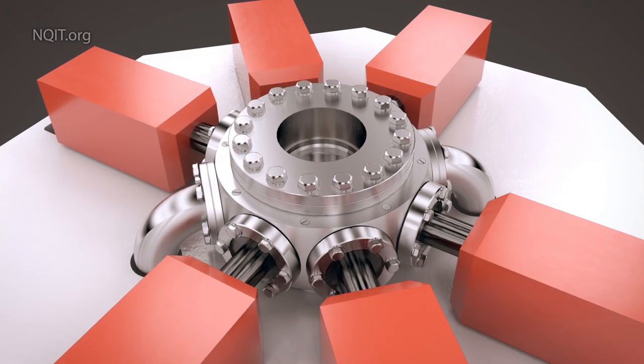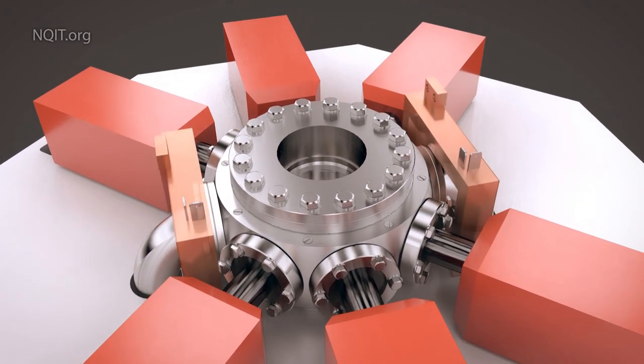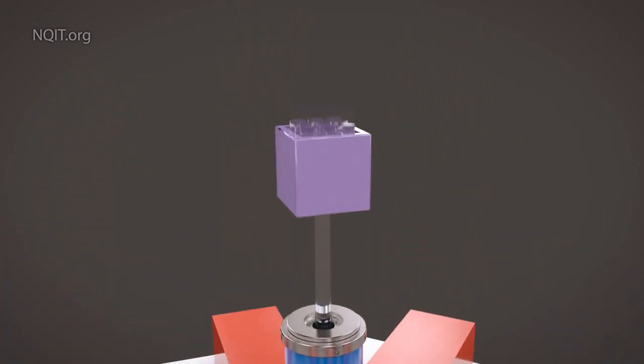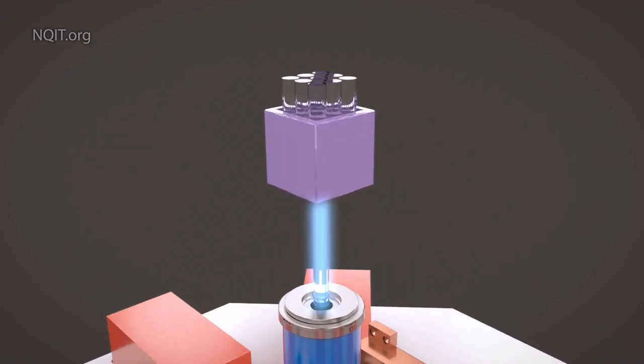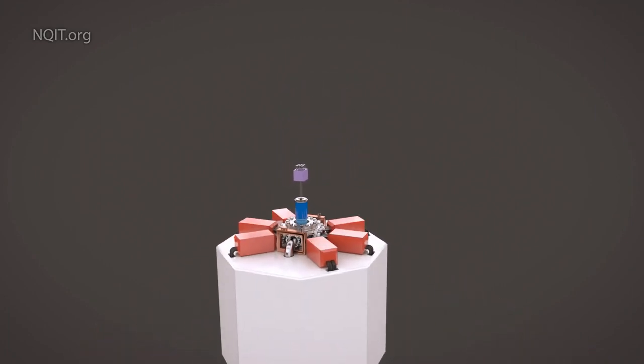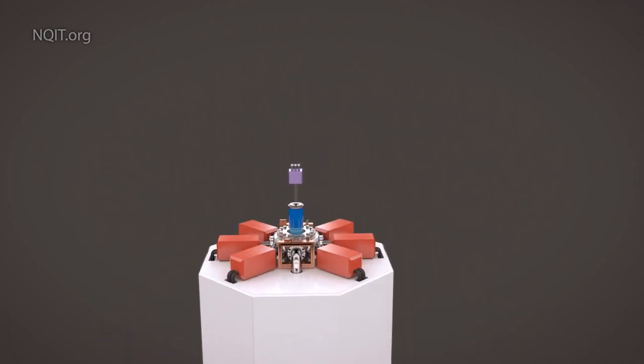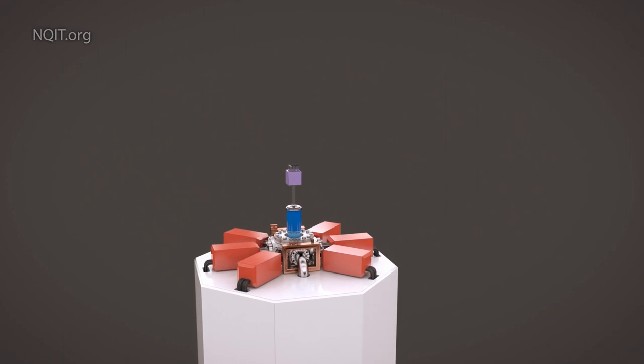Surrounding the vacuum chamber are laser systems, field coils, and crucially a photonic link system to capture the photons into an optical fiber. This complete module is a small quantum processor, but now consider two linked modules.